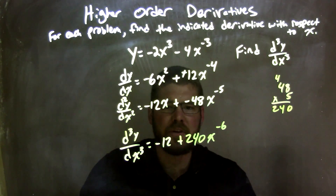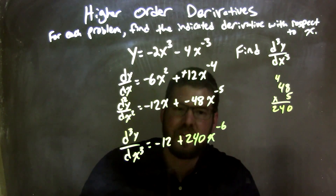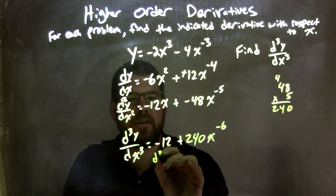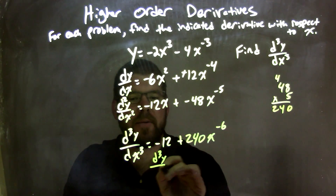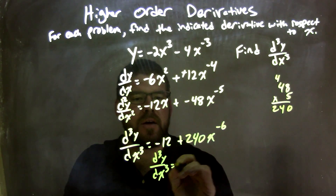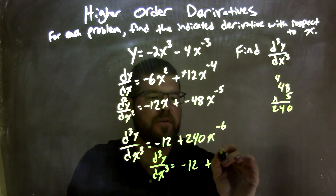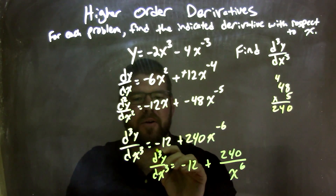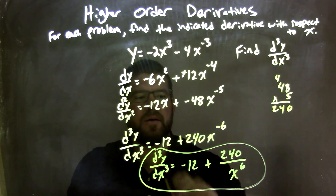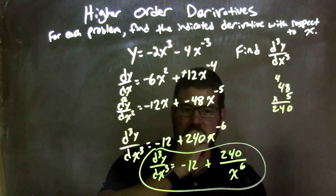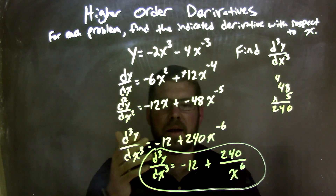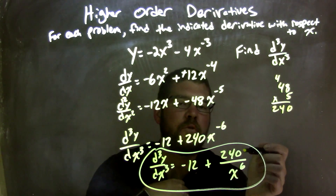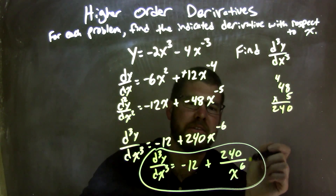When we write our final answer, we don't like to have x to a negative power. So rewriting d³y/dx³, we have negative 12 plus 240 over x to the positive 6th power. And there we have it — our final answer is the third derivative equals negative 12 plus 240 over x to the positive 6th power.